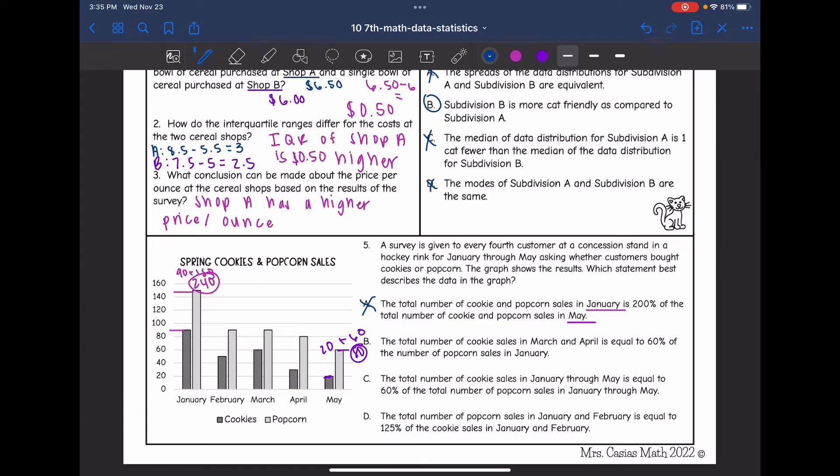B says the total number of cookie sales in March and April is equal to 60% of the number of popcorn sales in January. So let's look at cookie sales in March and April. March had 60 cookie sales and April had 30 cookie sales, which is 90.